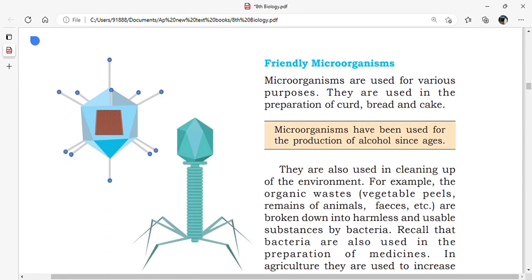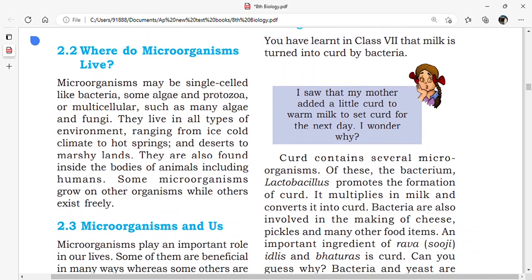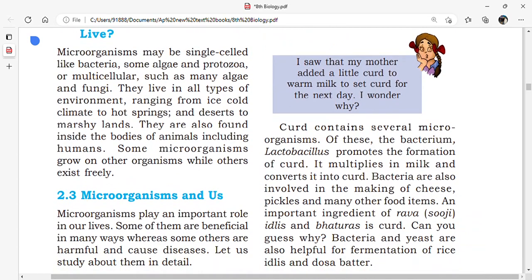First we should learn about where microorganisms live. Microorganisms are present everywhere. They live in all types of environment ranging from ice cold climates to hot springs. Microorganisms are present everywhere, from ice cold climates to hot springs.